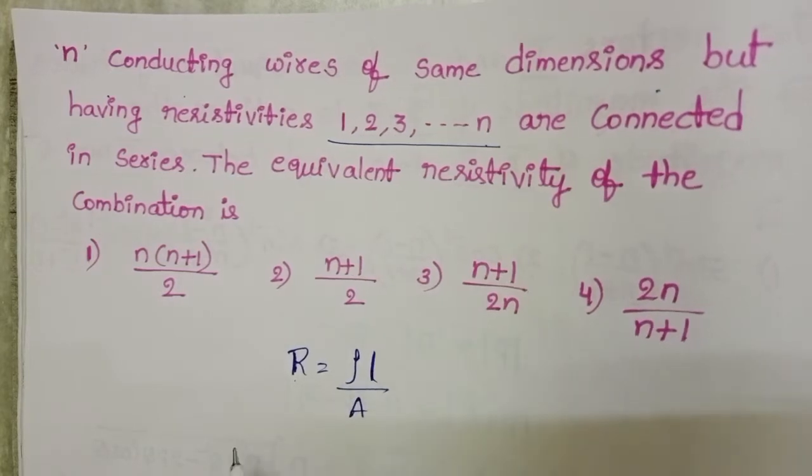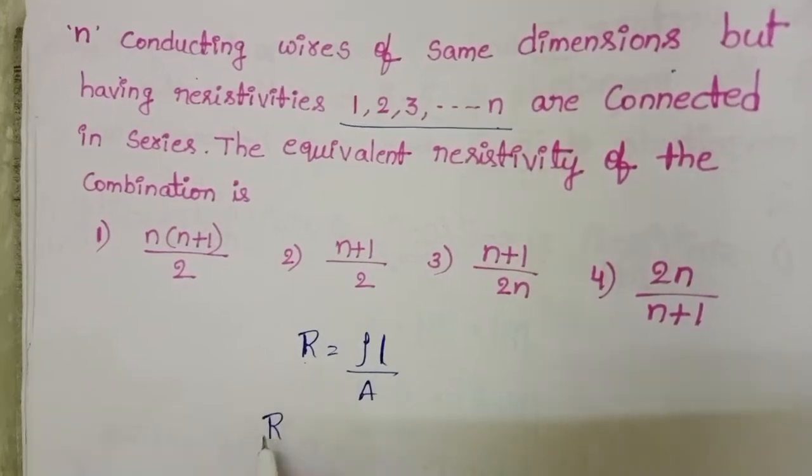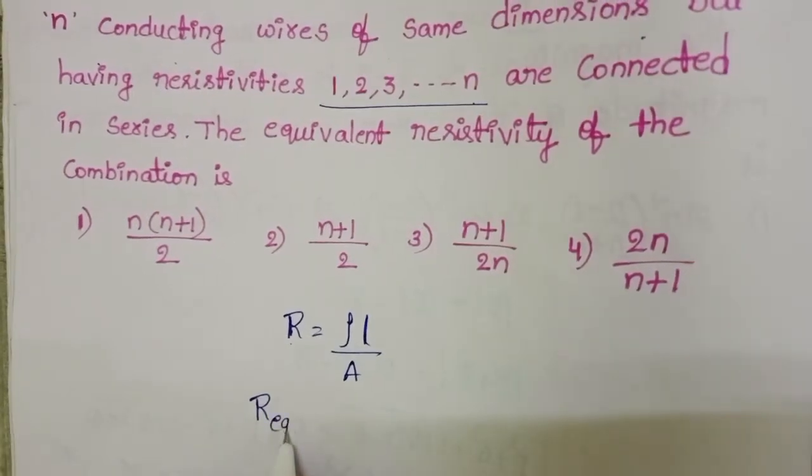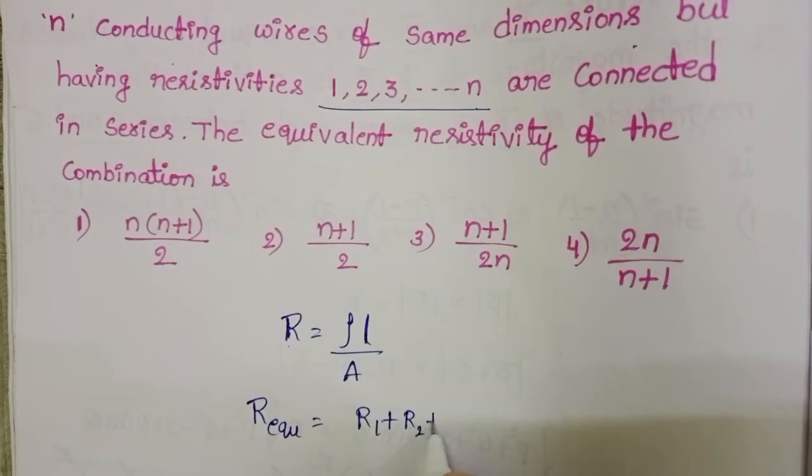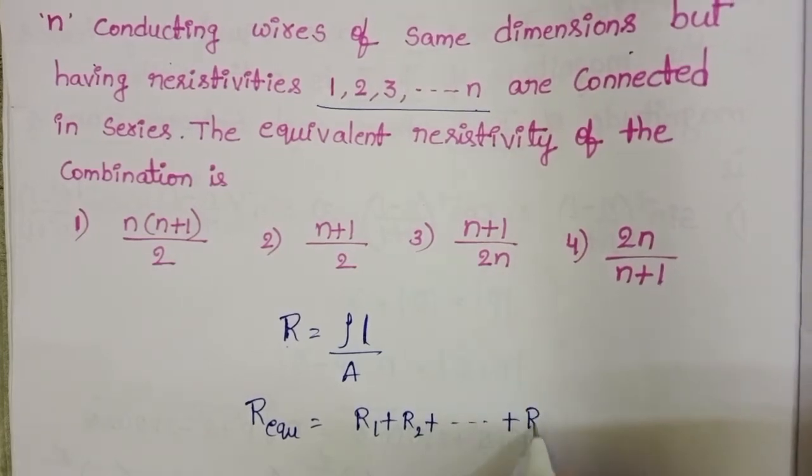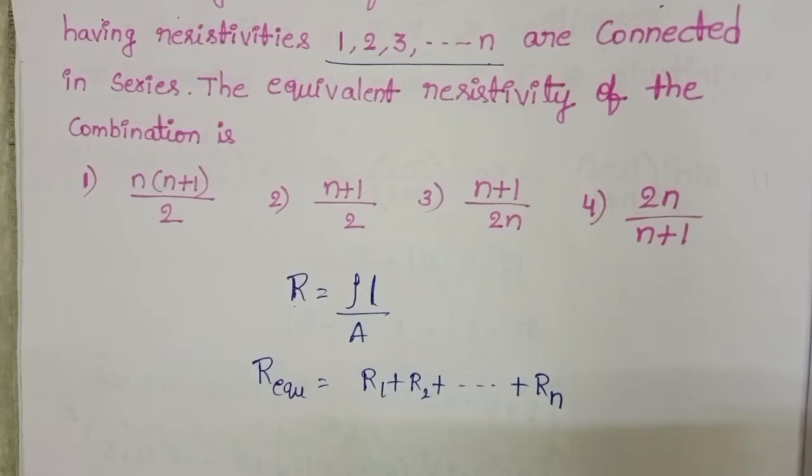N number of resistors connected in series. When N number of resistors connected in series, then equivalent resistance is equals to R1 plus R2 plus and so on Rn. This is the formula to find out the equivalent resistance of N number of resistors connected in series.